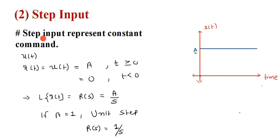Step input represents a constant command and is denoted by u(t). Here you can see that it is a constant command which has magnitude a. The step signal is given by r(t) equal to u(t) equal to a when t is greater than or equal to 0, where a is the slope. When t is less than 0, its value is 0. Here you can see that when t is greater than or equal to 0 its magnitude is a.